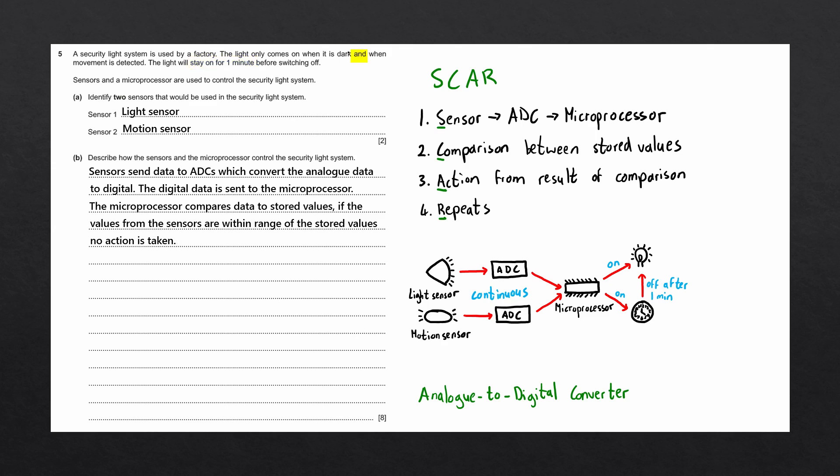Important to note this AND in the question, which infers that it must be dark and movement must be detected. So both sensors need to be outside of the range of the stored values. If both values are within the range, the microprocessor sends a signal to switch the light on, and a one-minute timer is started. When the timer reaches one minute, a signal is sent to switch the light off.